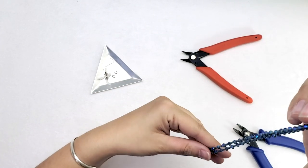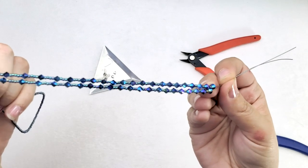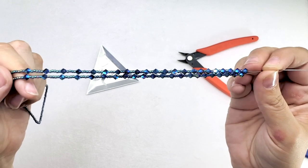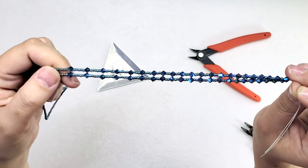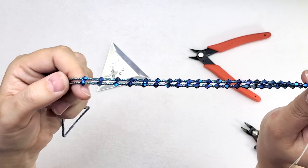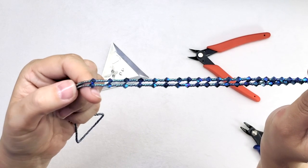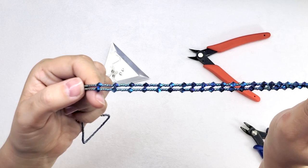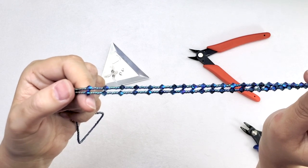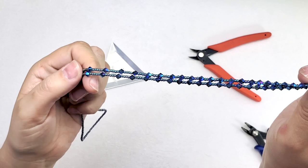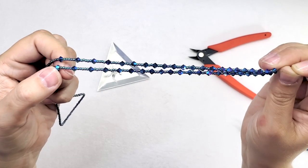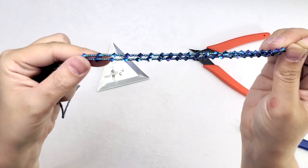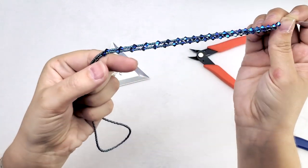Then what I did is I started to incorporate my 3 millimeter bicone crystals, and these are in Montana blue double AB, which I think is a gorgeous color. And in this case I did go monochromatic and I matched the crystals to the seed beads. You can certainly have as much fun as you want and you can make it pop a little more, or you can stick with a monochromatic look like I did.